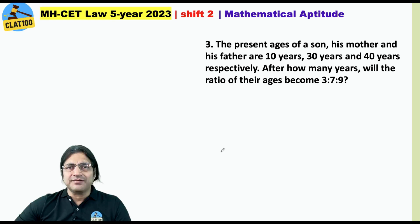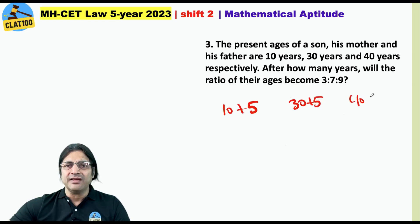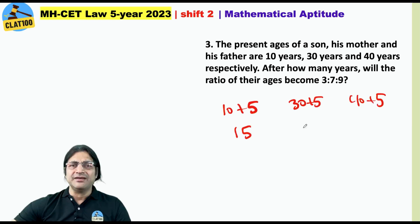The present ages of a son, his mother and his father are 10 years, 30 years and 40 years respectively. After how many years will the ratio of their ages become 3:7:9? You just needed to take help of the options. One of the options was five. So after five years the age of the son would be 15, the mother 35, and father 45. The ratio is 3:7:9.